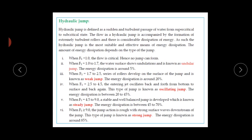First we need to know what a hydraulic jump is. You may have studied this in the fourth semester, so I will give a brief introduction. The sudden rise in water level when flow comes from a supercritical state to a subcritical state is called a hydraulic jump. In other words, a hydraulic jump is a sudden and turbulent passage of water from supercritical to subcritical state. The flow in a hydraulic jump is accompanied by the formation of extremely turbulent rollers and there is considerable dissipation of energy.